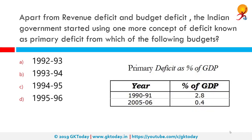Apart from revenue deficit and budget deficit, the Indian government started using one more concept of deficit known as primary deficit from which of the following budgets? The correct answer is 1993-94. The primary deficit is defined as the difference between current government spending on goods and services and the total current revenue from all types of taxes, net of transfer payments.